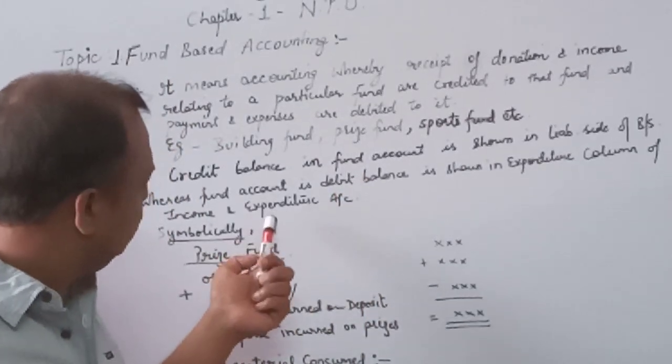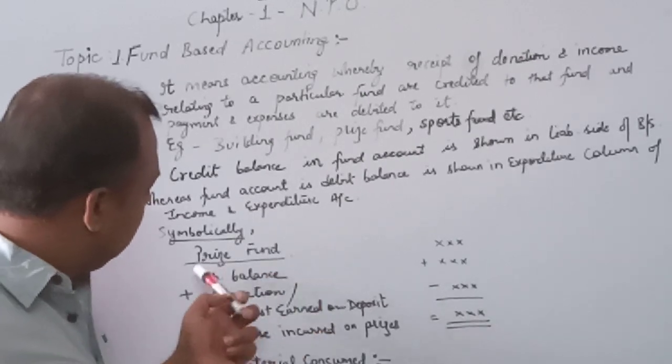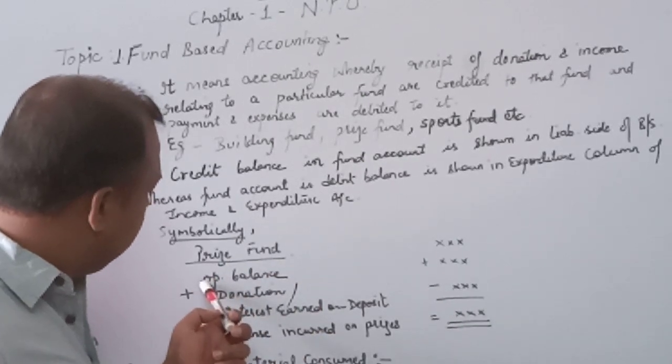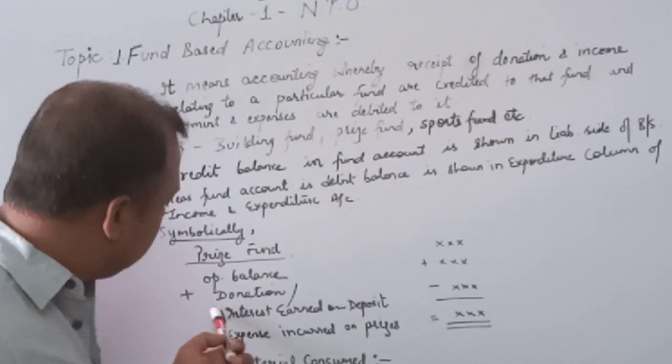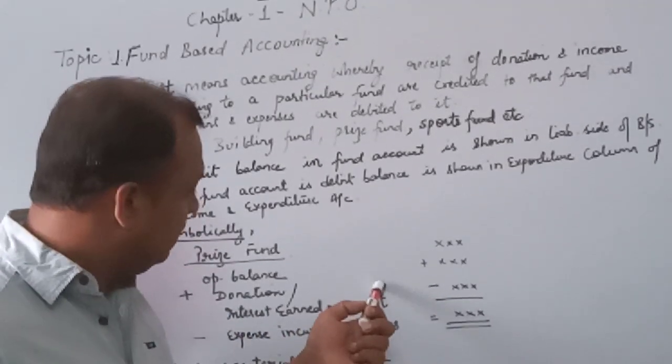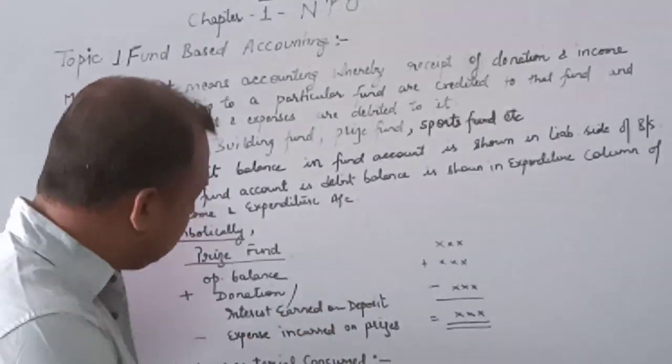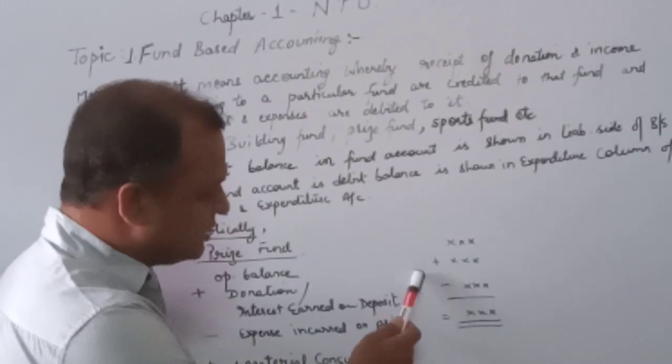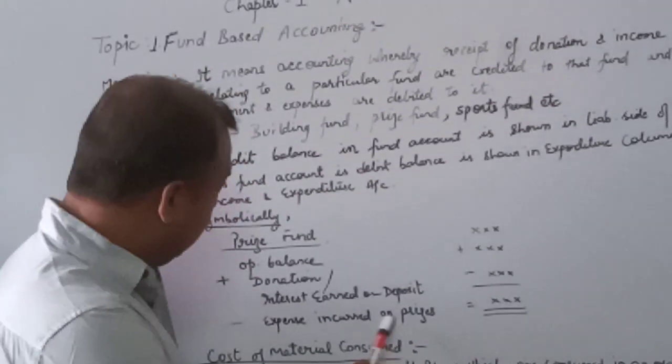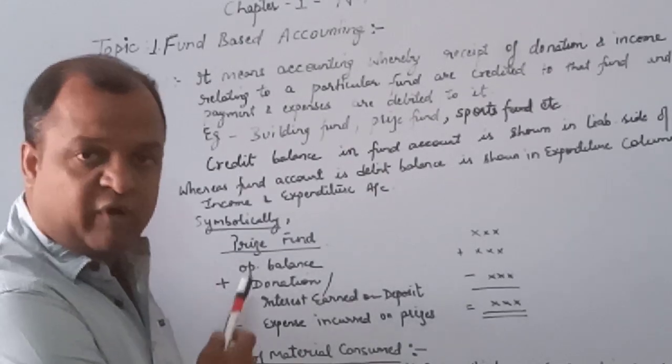I have mentioned the formula how it will be calculated. Prize fund will be calculated as follows: the opening balance of the fund plus any donation or any interest earned on that specific investments made will be added to that fund account, and any expense incurred during accounting year will be subtracted, resulting in the net amount in that specific fund account.